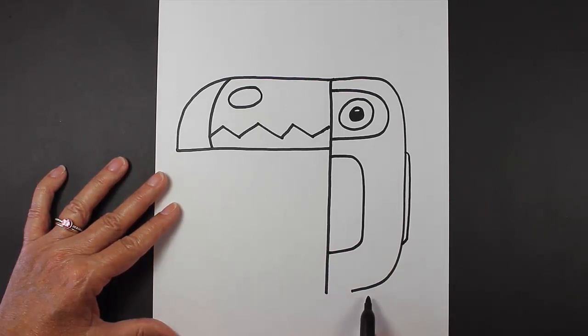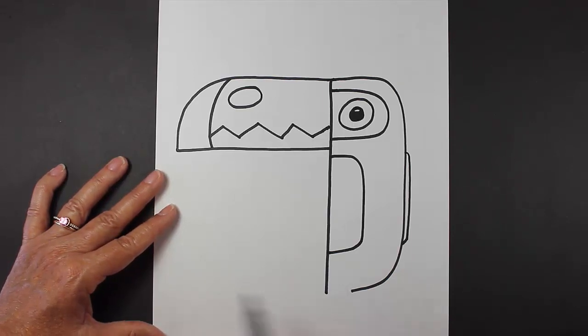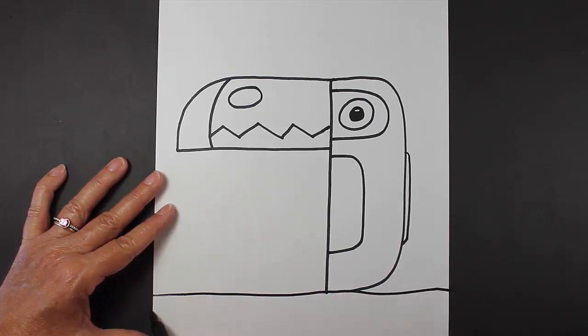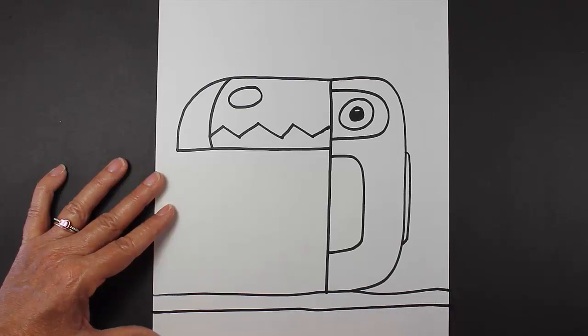Now we're going to go down here to the bottom, and we are going to create a branch for our toucan to sit on. So let's do that. Let's just create a branch. Branches don't necessarily have to be super straight, but there is a thickness to them, so you'll want to make two lines.